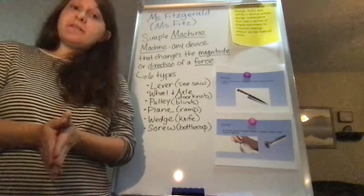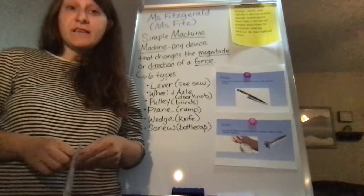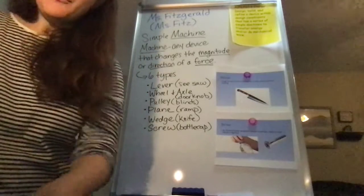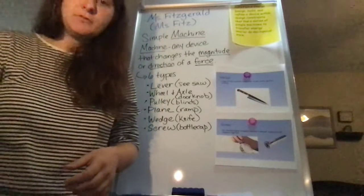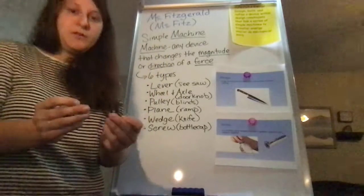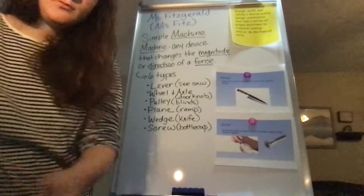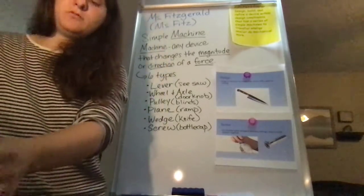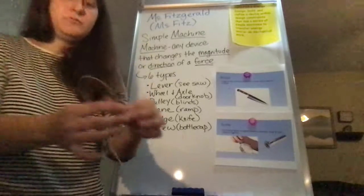So for the we do portion of this assignment, I'm going to provide some simple materials and we're going to see if we can think of a way to create a machine out of these materials, simple or compound. Okay. So I have here two popsicle sticks, two washers, two paper clips, two nails, and a string.